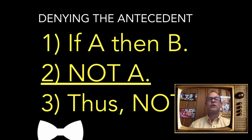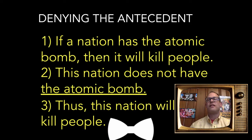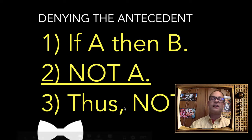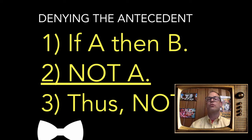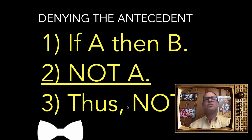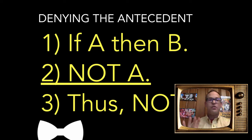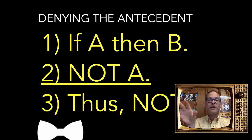The second formal fallacy is denying the antecedent: If A then B, not A, thus not B. It's presented using statement variables A and B because I could substitute any statement — it doesn't matter what it is. If it takes this form, it will be a fallacy. For example: 'If a nation has the atomic bomb, then it will kill people. This nation does not have the atomic bomb. Thus the nation will not kill people.' That's false — nations have killed people without ever having the atomic bomb. It's the form that's wrong.